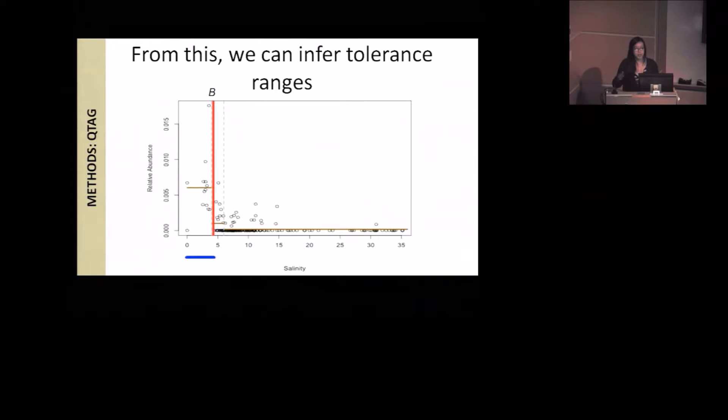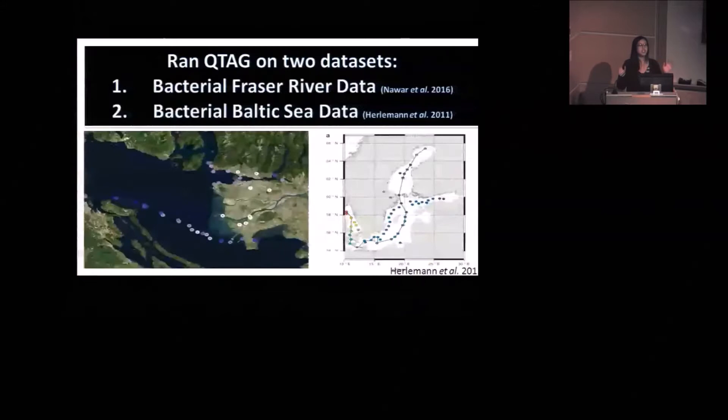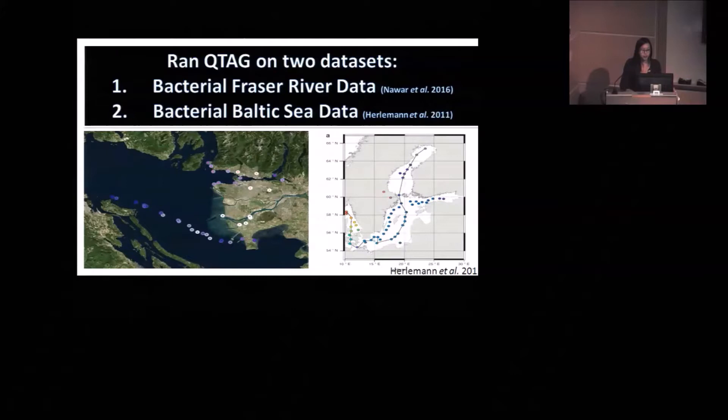We took QTAG and ran it on two data sets, one from the Fraser River and one from the Baltic Sea. These two rivers have a very similar range in salinities from zero to about 30 or 35 parts per thousand. But they're different because the Fraser River flows very quickly and the water that stays in the brackish area is very transient. Whereas the Baltic Sea, the brackish water has a very long residence time. So things that live in that brackish water live in a relatively stable environment. We thought it would be neat to compare these two systems to see what kind of trends were consistent and what trends were very different between them.